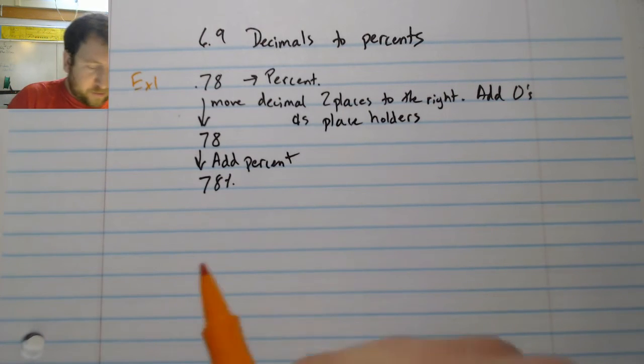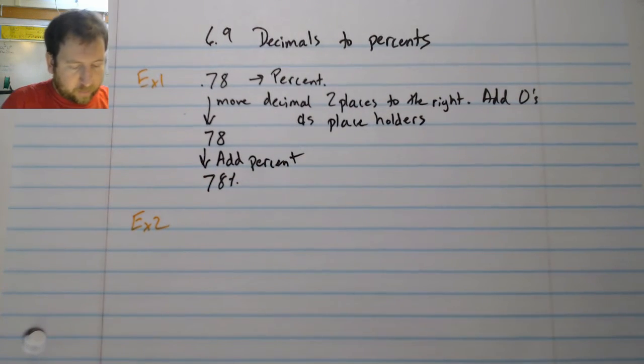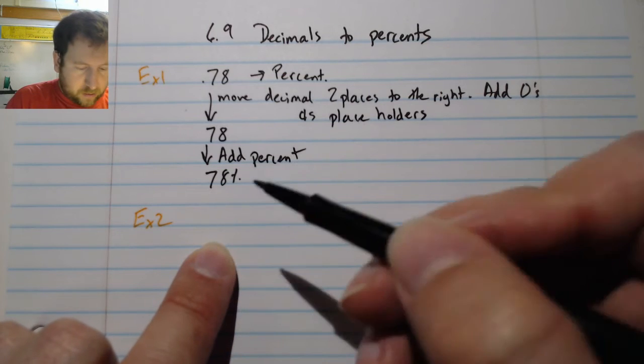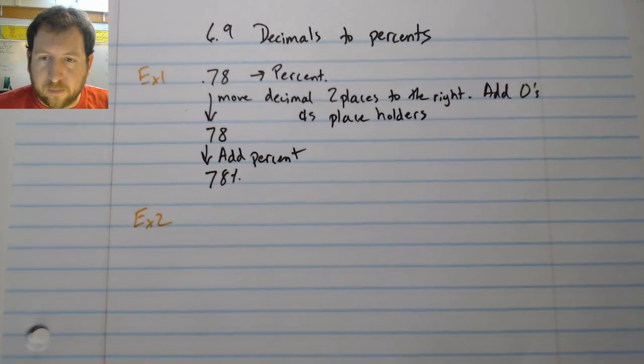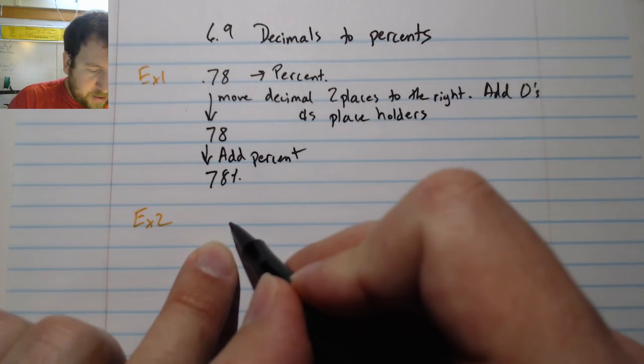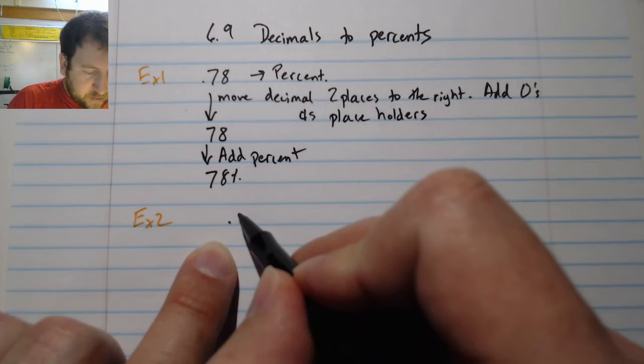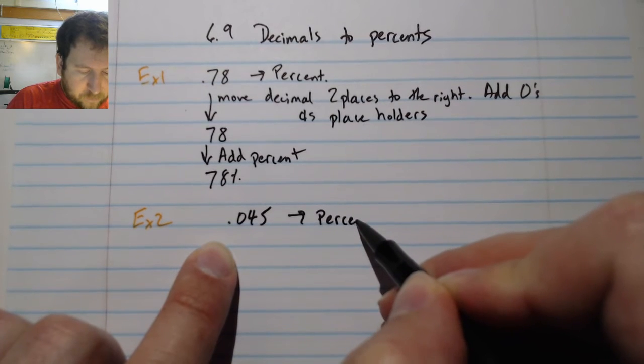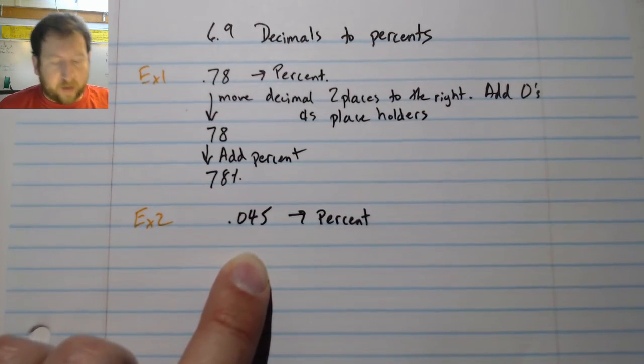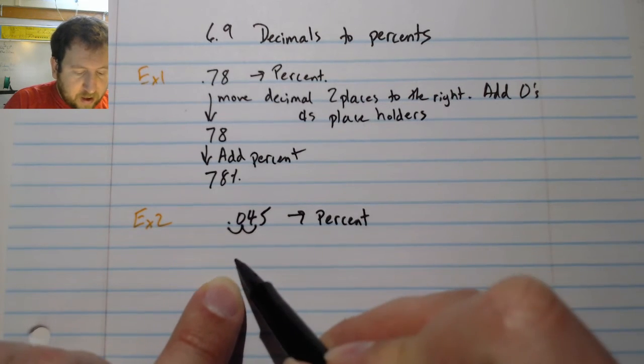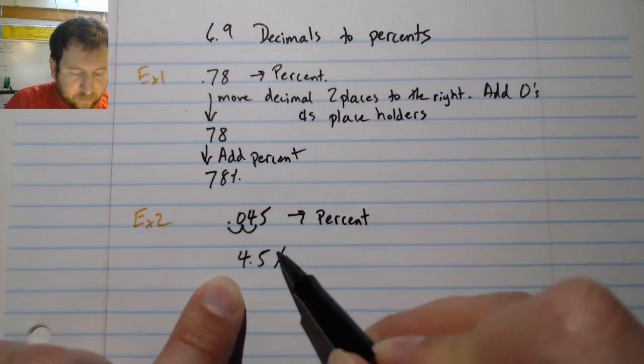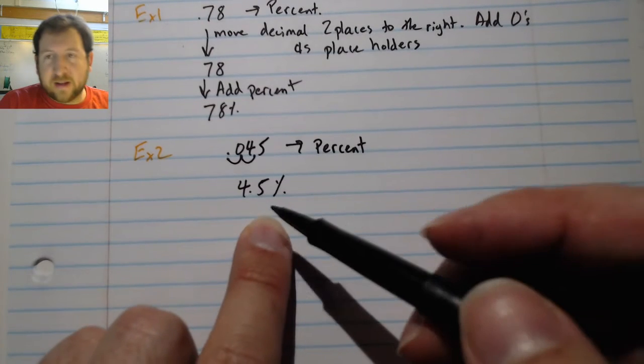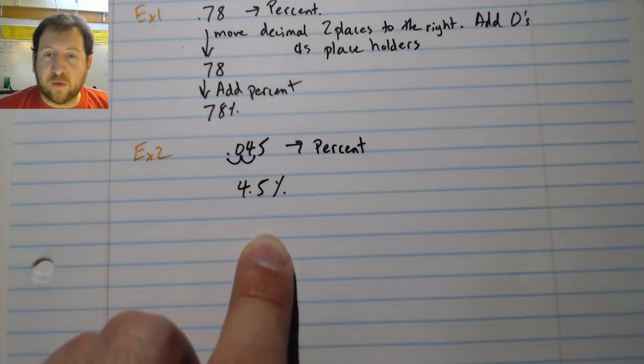Let's take a look at example two real quick. We're going to do 0.0452 to percent. All right, so here all we're going to do is move our decimal two places over. One, two. And it's going to give us 4.5 percent. Because I did all of these steps as I went through it. Now, this one I did not have to add any zeros, but occasionally I do have to do that.